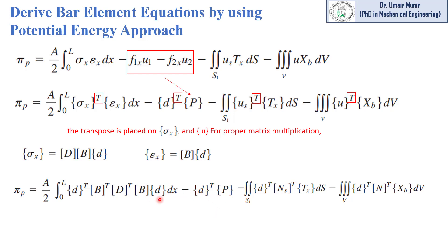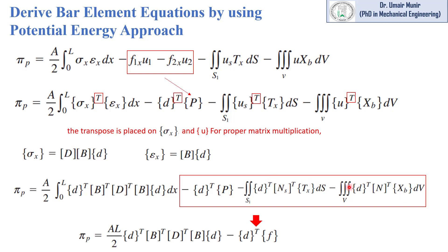This is a long equation and we want to simplify it. The potential energy due to the nodal force, surface force, and body force terms may be replaced by a single force matrix multiplied by the displacement matrix transpose, using a u-star matrix representation. The equation has now been simplified.